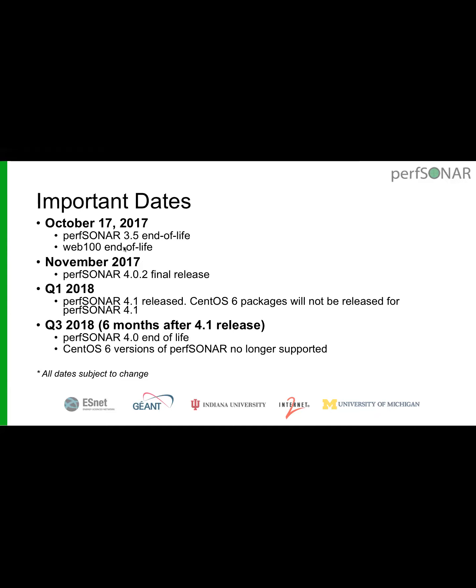The next imminent release is 4.0.2, targeted for November 2017 with a beta in October. After that, in Q1 of next year, we'll be doing PerfSONAR 4.1 — our next major release. Importantly, as of 4.1 we will no longer be releasing CentOS 6 packages, so we'd really like people to upgrade to CentOS 7 between now and then.